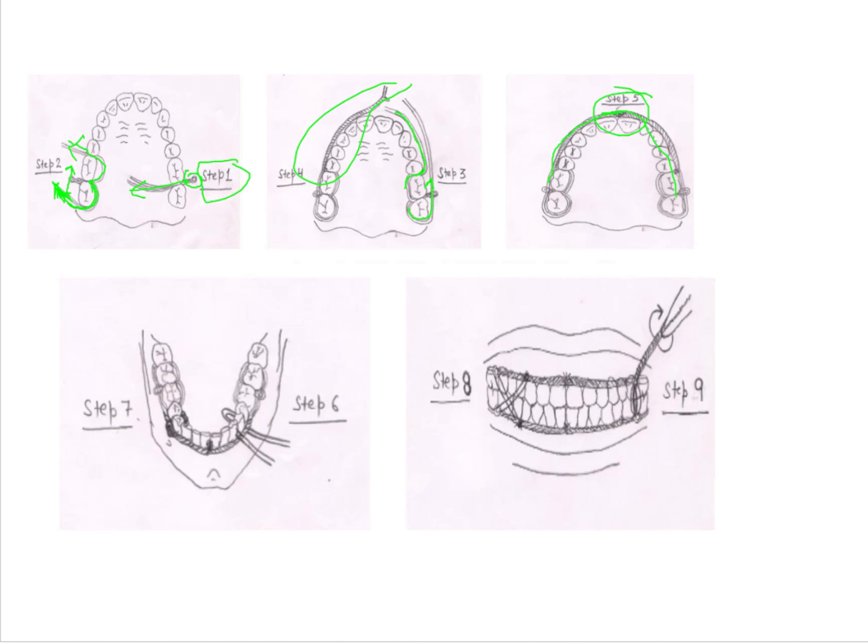So this is one securing method. In the next steps, what will you be doing? You'll be bringing ligature wires and these wires will be passed through the interdental area around a single tooth, both the interdental areas, and then you'll be securing this particular wire with these two ligature wires.